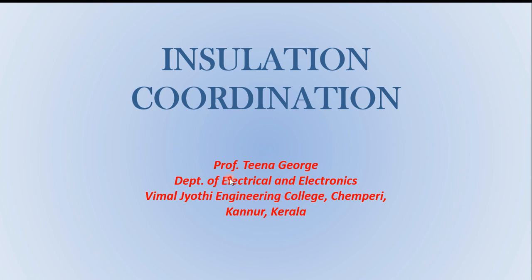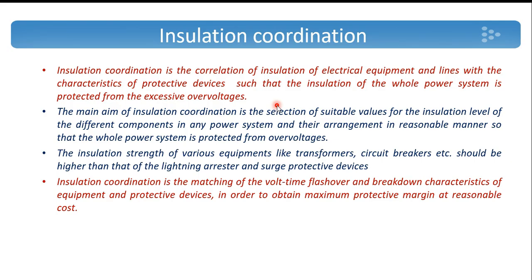In this video we can see insulation coordination of power systems. Insulation coordination is used in power systems for the protection from excessive over-voltages. It is the correlation of insulation levels of different equipments in the power system including the protective devices. The main aim of insulation coordination is selection of suitable values of insulation levels for different components in the power system and their arrangement in a reasonable manner so that all power system is protected from over-voltages.